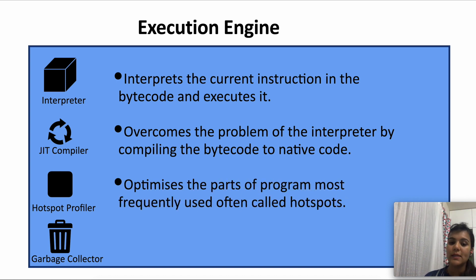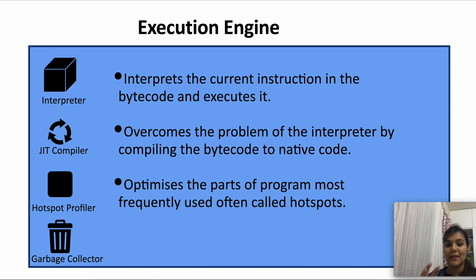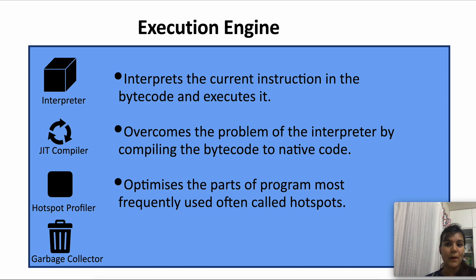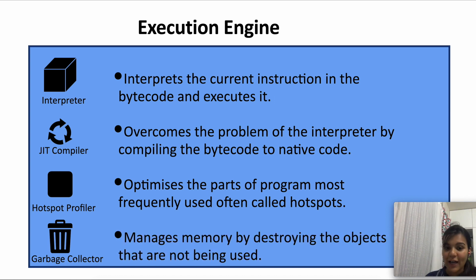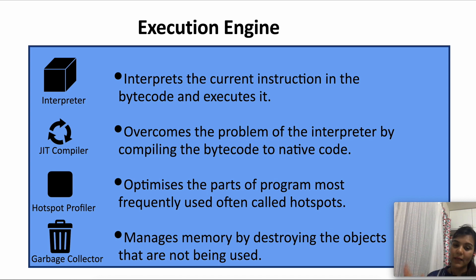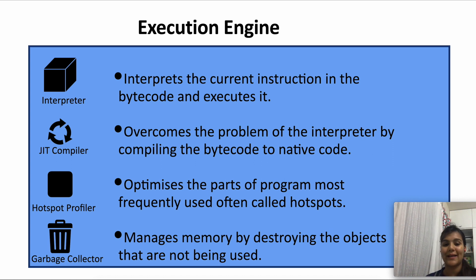The spots in the code that keep executing very frequently are called hot spots. The HotSpot profiler's job is to optimize these parts of the program — it puts a lot of special effort into finding techniques to optimize these hot spot sections of code. Last but not least is the garbage collector. The garbage collector manages memory by destroying objects that are not being used anymore — these are called non-live objects. It runs on its own by the JVM, so we don't have control over the garbage collector. More about the garbage collector in the next video.